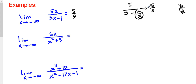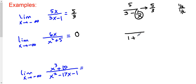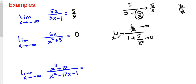What about when the degree of the bottom is higher? If x is going to positive infinity, the top grows at a lesser rate than the bottom, so the ratio is 0. What if x is going to negative infinity? The answer will still be the same. To show this, multiply top and bottom by 1 over x squared. x squared times 1 over x squared gives 1 plus 5 over x squared in the denominator, and 6x times 1 over x squared gives 6 over x in the numerator. As x goes to infinity, both terms go to 0, leaving 0 over 1, which is 0.